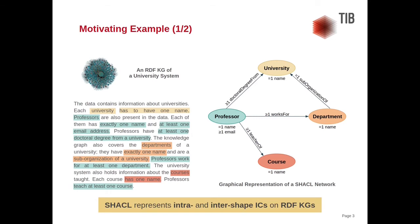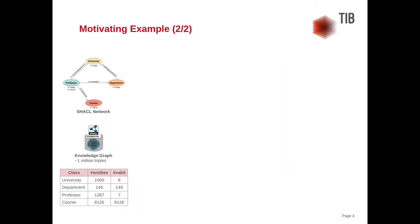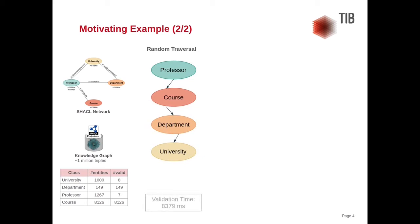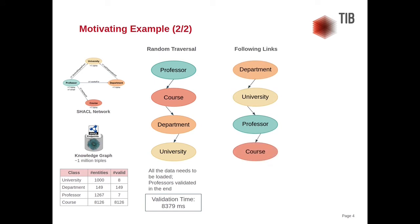SHACL represents intra- and intershape integrity constraints on RDF knowledge graphs. Given the SHACL network of the university system and a knowledge graph with about 1 million triples accessible via a SPARQL endpoint, there are several possibilities to evaluate the network. For example, a random traversal order — professor, course, department, university — takes about 8.4 seconds, since all the data needs to be loaded from the endpoint. Another possibility is to follow the links between the shapes: department, university, professor, course. This order is slightly faster, but it still takes 6.7 seconds.